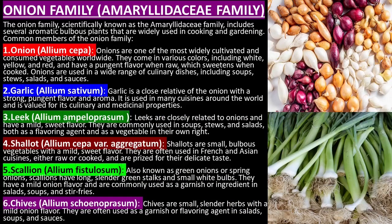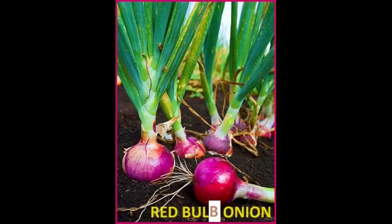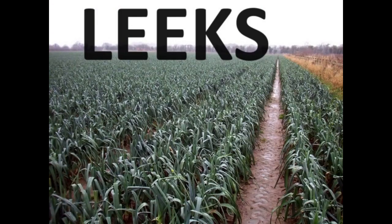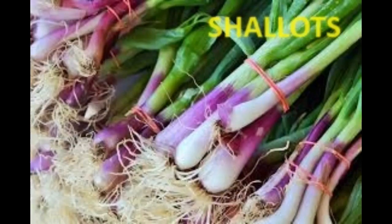The onion family, scientifically known as the Amaryllidaceae family, includes several aromatic bulbous plants that are widely used in cooking and gardening. Some common members of the onion family are bulb onions, garlic, leeks, and shallots.